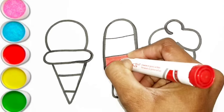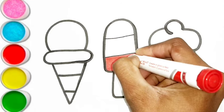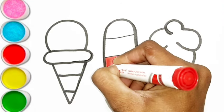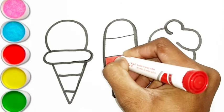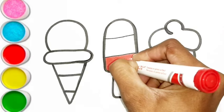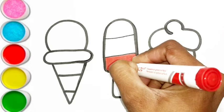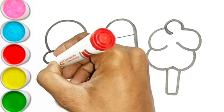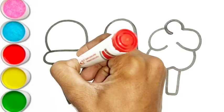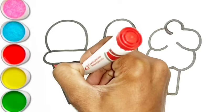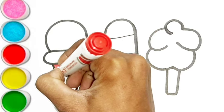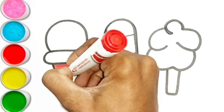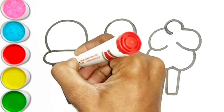D is for doll. D, d, doll. E is for elephant. E, e, elephant. F is for frog. F, f, frog.